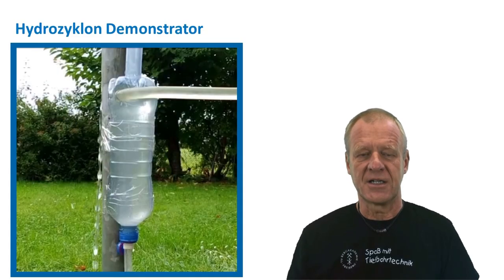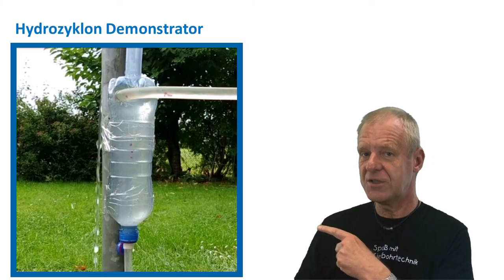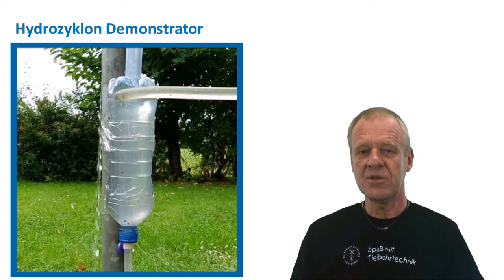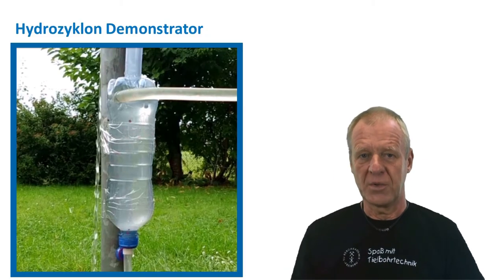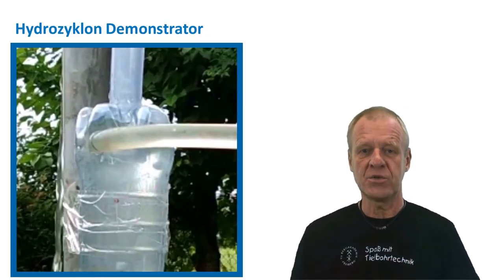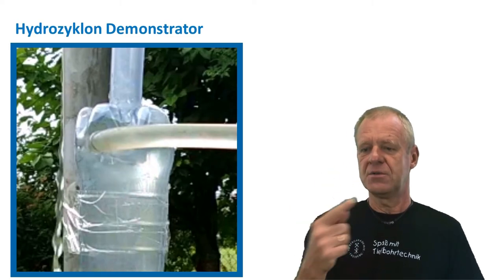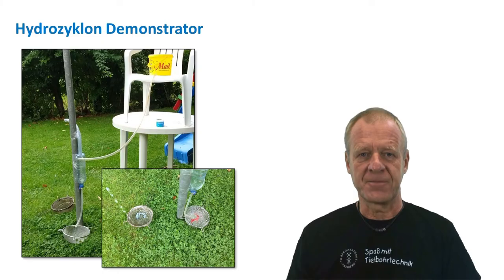We have built here a pretty simple model of a cyclone using an old drinking bottle. You can see, if you look closely, the lighter blue plastic particles in the flow are following the flow, which is exiting at the top end of the bottle, while the heavier red particles leave the cyclone in the underflow.